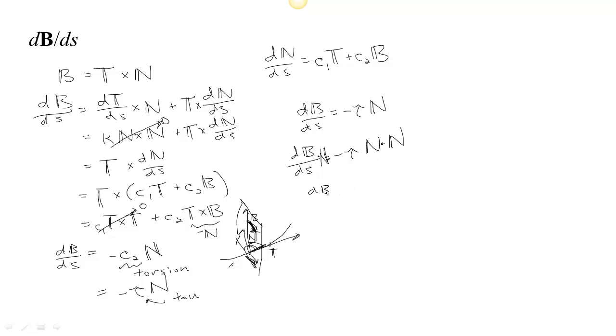And when we do that, N dot N, since N is a unit vector, is 1. So we get dB/ds dot N is negative tau times 1, or just negative tau. That means tau is negative dB/ds dot N.